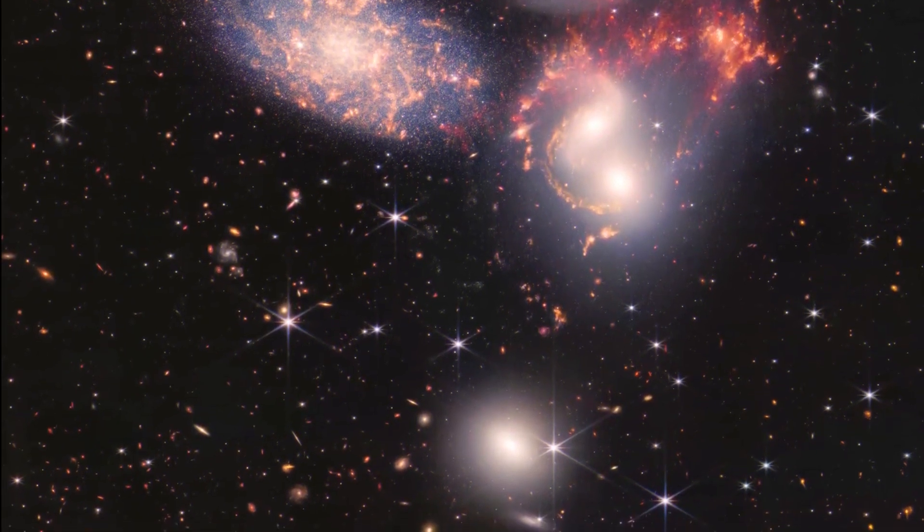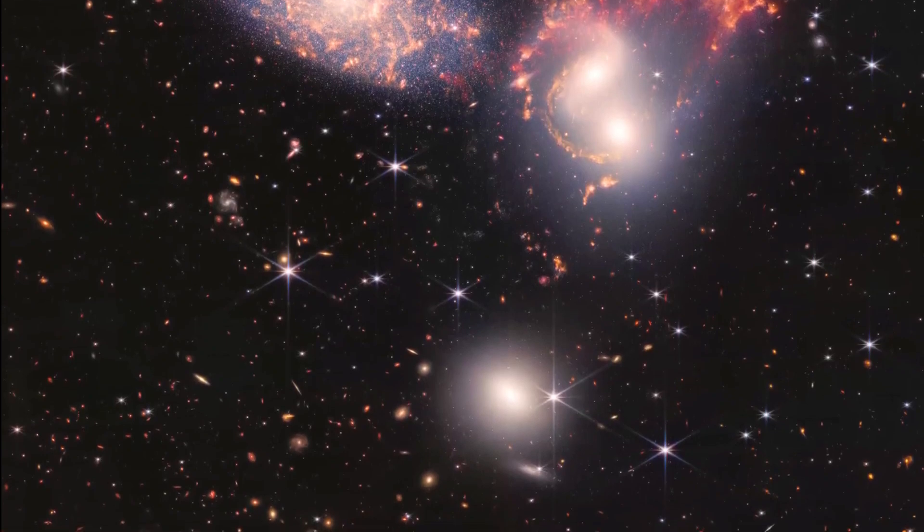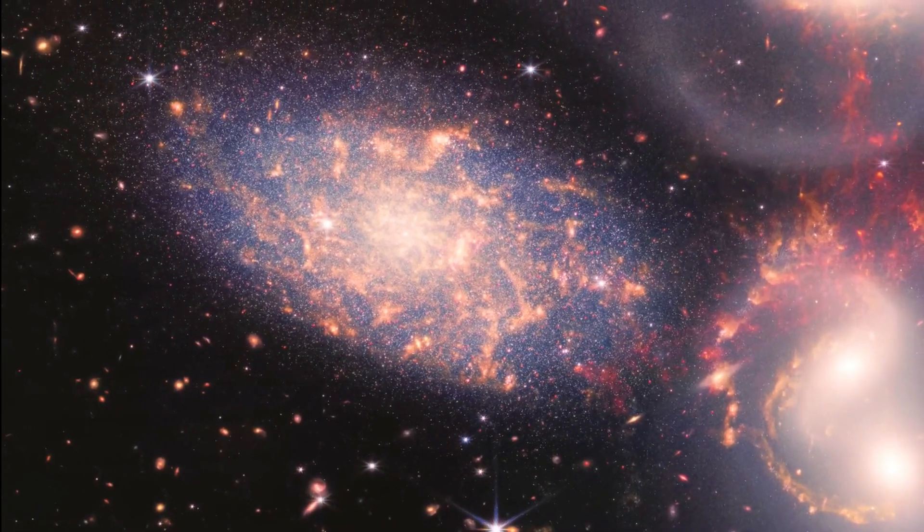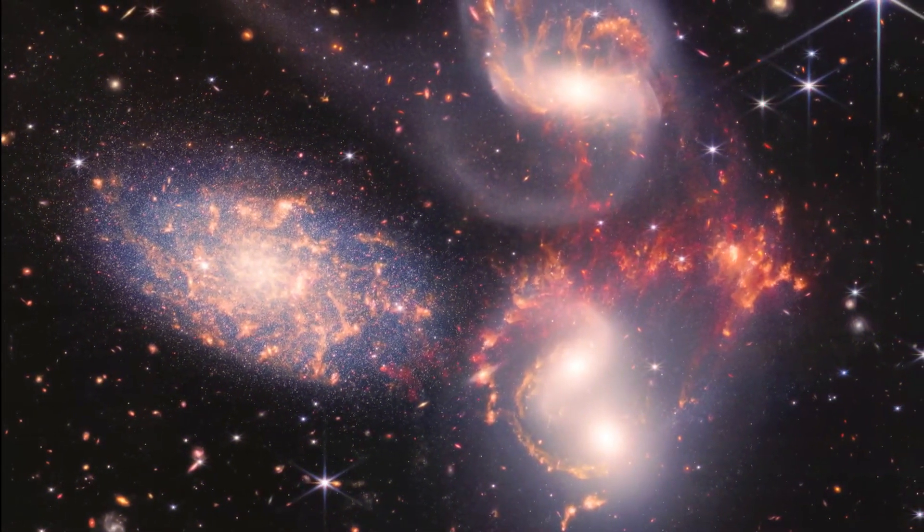Webb's sensors, NearCam and Miri, have shown individual stars inside star-forming clusters of gas in the outer ring of the Cartwheel Galaxy, as well as clusters of very young stars around the galaxy's center supermassive black hole, which is also obscured by dust.